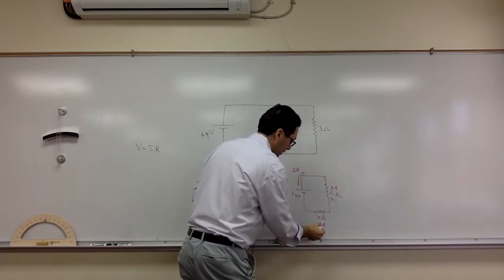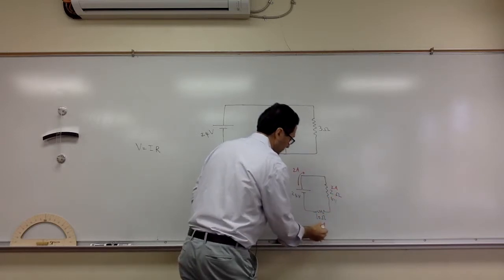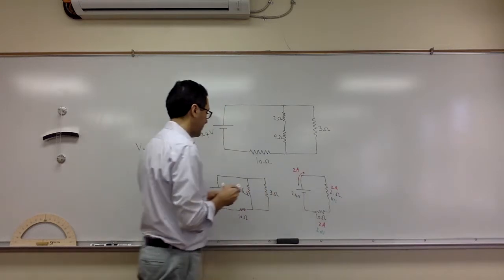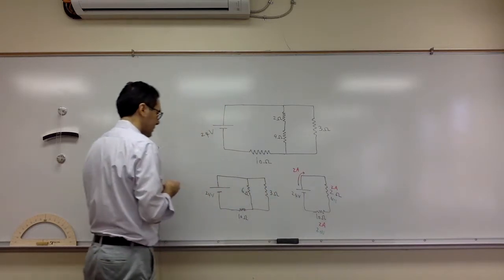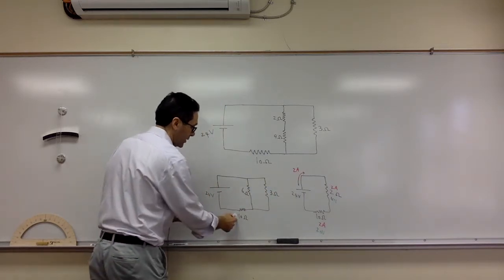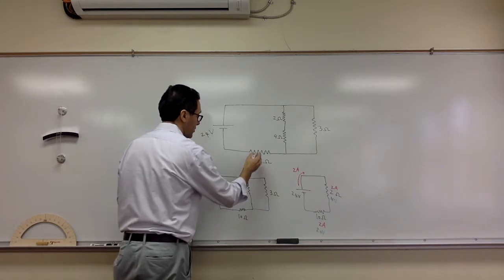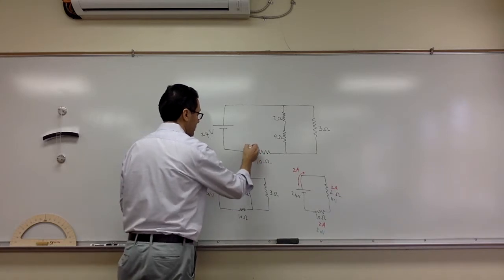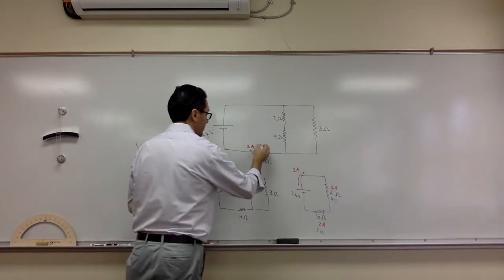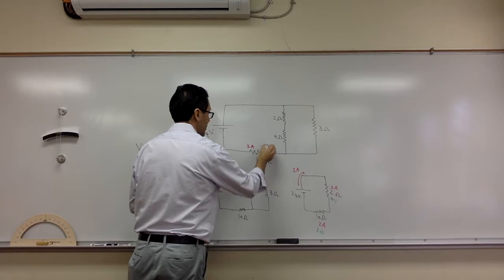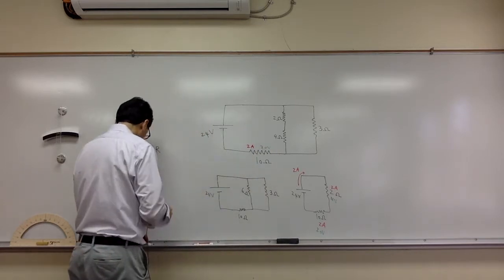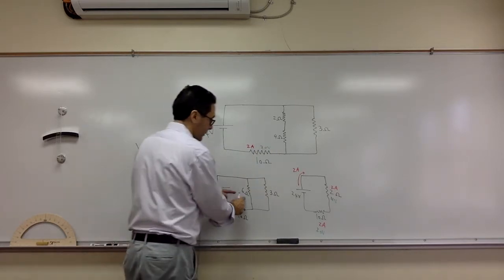This is going to be 20 volts. So 20 and 4 is 24, which makes sense. The 10-ohm resistor is pretty much done — it's two amps and 20 volts. Now let's go back to the parallel section.